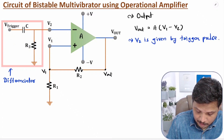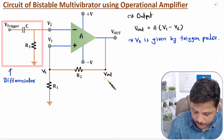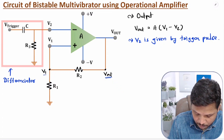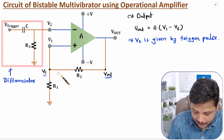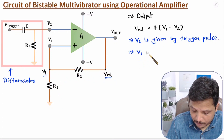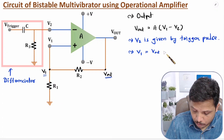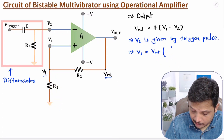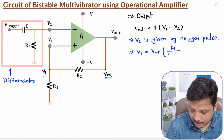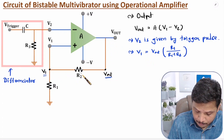Now what is V1? If you observe, this Vout is given in positive feedback. So at this terminal we have Vout voltage and at this terminal we have V1 voltage. V1 will be as per voltage divider rule. V1 is this Vout voltage into resistance R1, divided by both resistances added — that is R1 plus R2. So V1 is happening based on Vout as per potential divider rule.